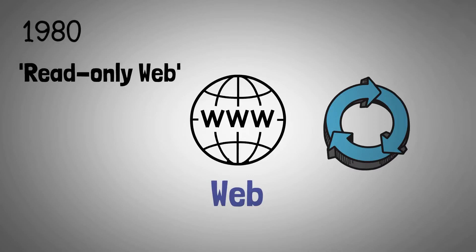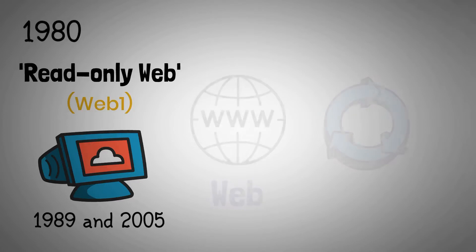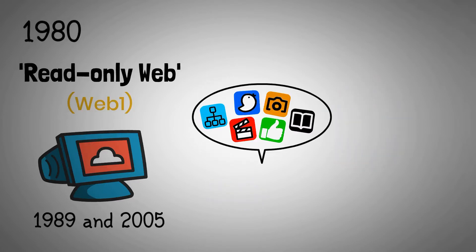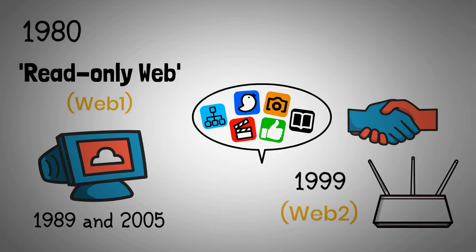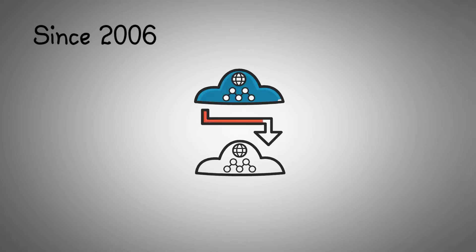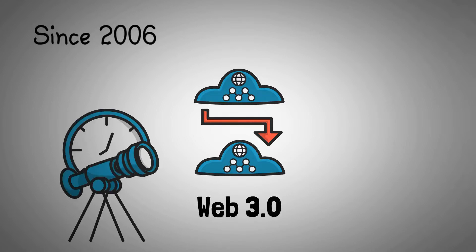The read-only web, also known as Web 1.0, was invented and evolved between 1989 and 2005. With it as a foundation, social media and collaboration between creators and users emerged around 1999, resulting in Web 2.0. Since 2006, new technologies have dominated the web world, giving rise to a unique and somewhat loosely defined Web 3.0, which is touted as the web's future.